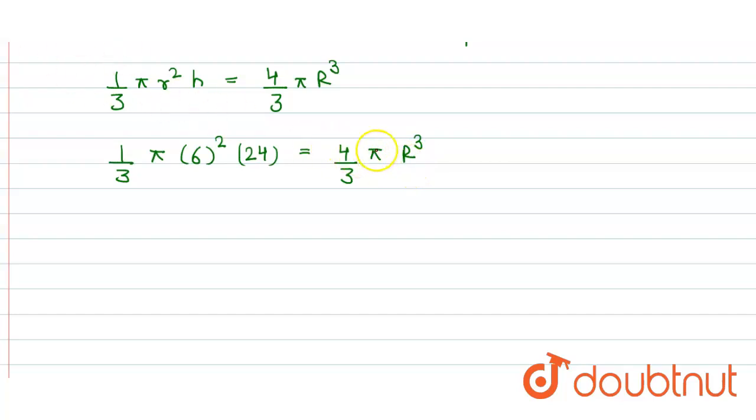π cancels out, the 3s cancel, and when 4 divides 24, we get 6. So 6³ = r³.